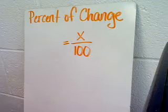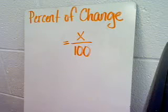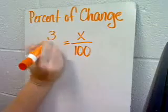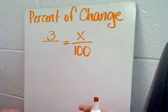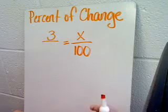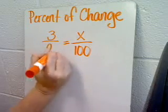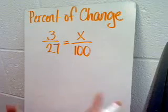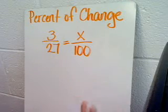The number from 27 to 30 representatives, that's an increase of 3, so the change is 3. The number of representatives there originally were is 27. This is going to give us the percent of change of the number of representatives over time.